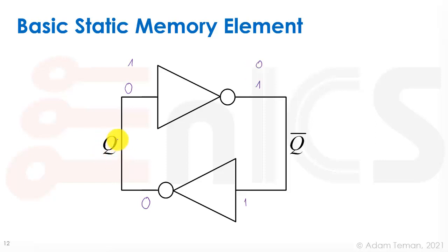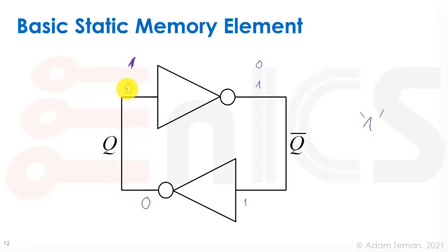We call the internal nodes Q and Q-bar (sometimes QB or Q0). We say the storage element is holding a 1 according to the state of Q — if Q is 1, we call it a 1; if Q is 0, we call it a 0. In the end, one node is VDD and the other is ground, and we just need to read that out of the cell and be able to write into it.